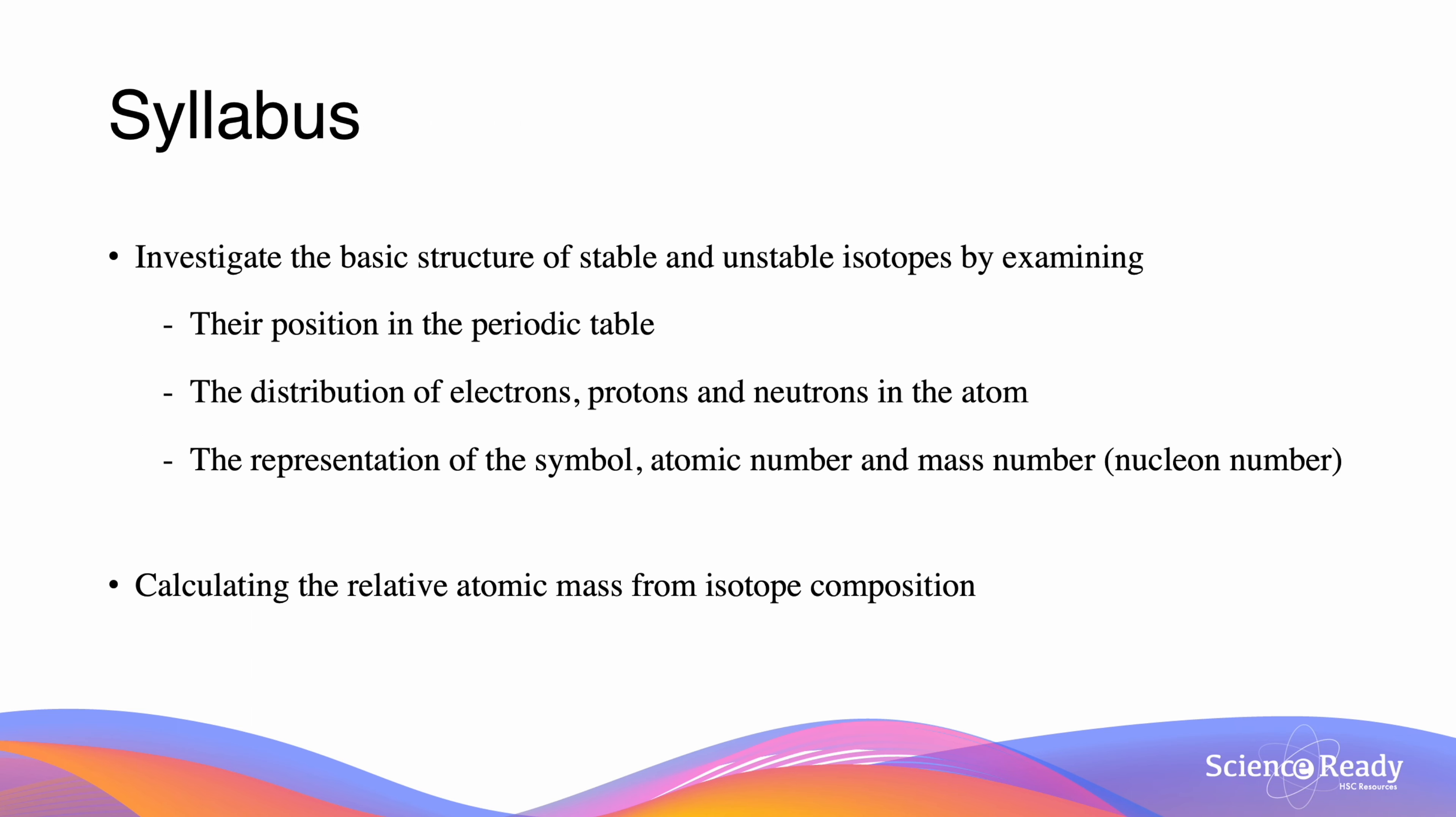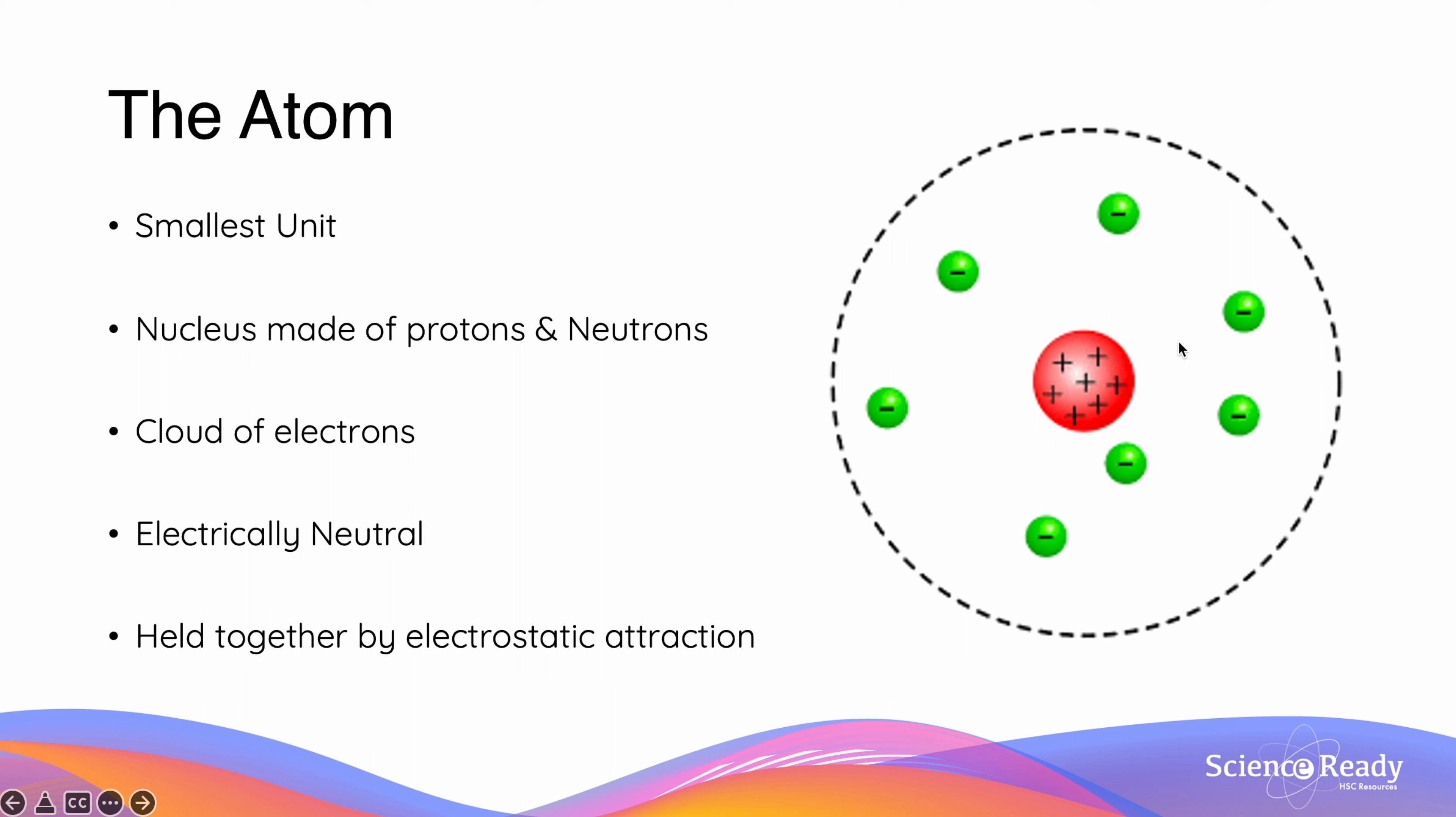These are the relevant syllabus dot points. The atom is the smallest particle of a chemical which can exist. The atom consists of two main components: a nucleus, which is the center, made of protons and neutrons.